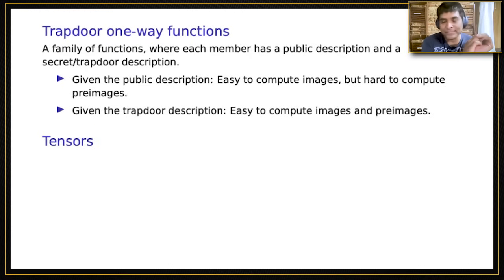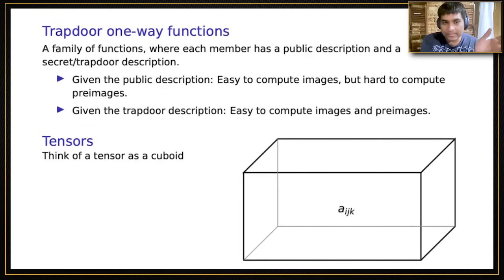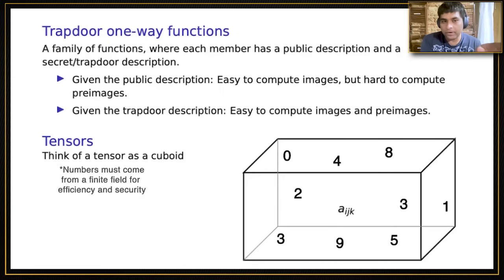So what's a tensor? It depends on who you ask. Don't ask a physicist, I'm just kidding. A tensor to us is just a cuboid of numbers, where i is an index in the x direction, j is an index in the vertical y direction, and k is an index in the z direction. For cryptography, these numbers have to come from a finite field, and this is required both for efficiency and security. You can just think of them as real numbers for now, and when you actually do cryptography, you have to go back to finite fields.